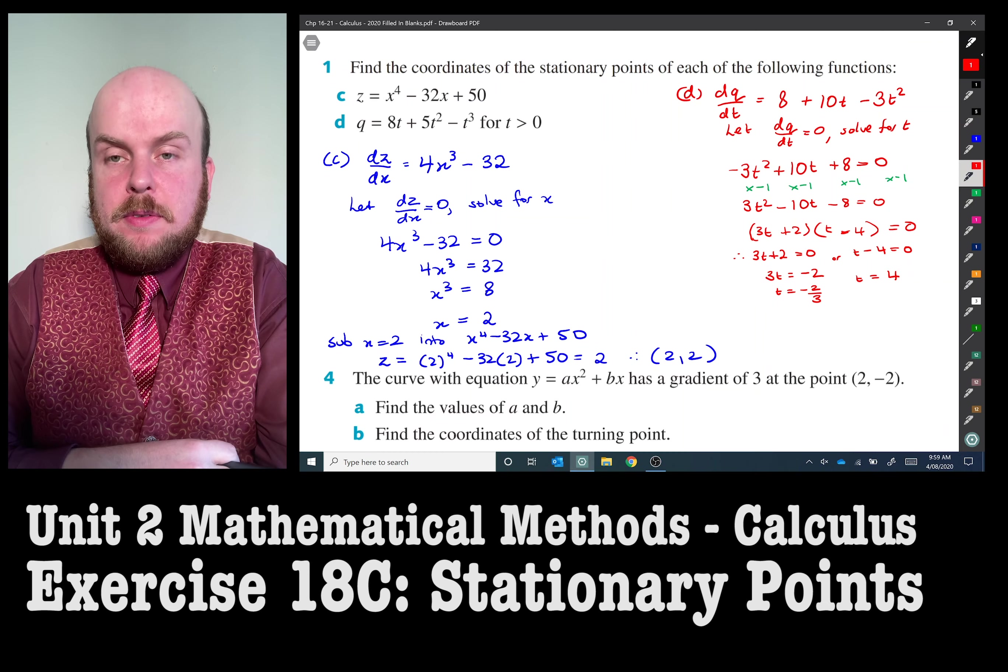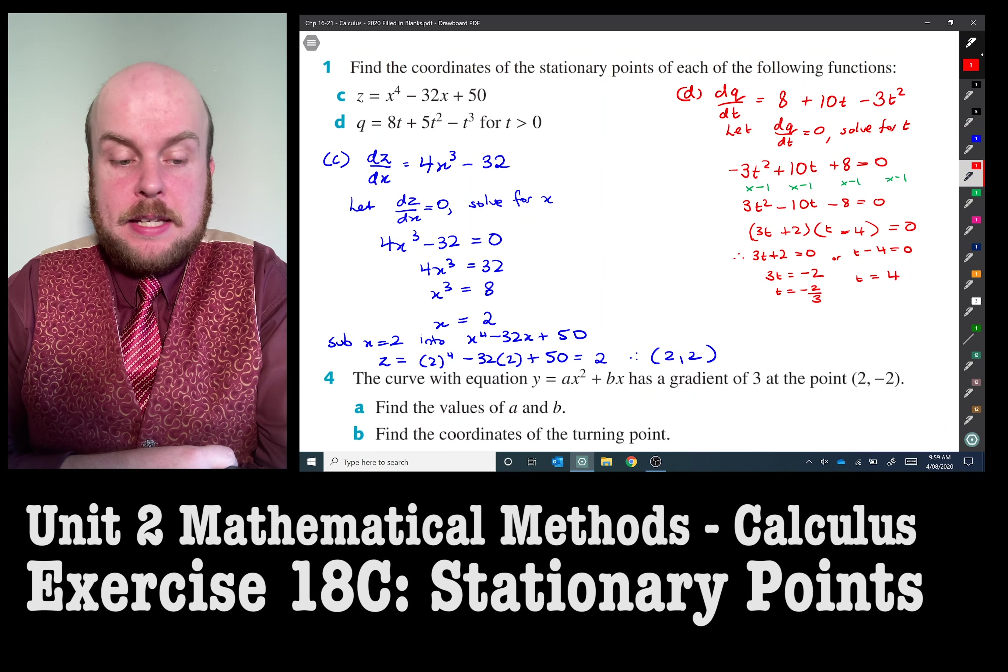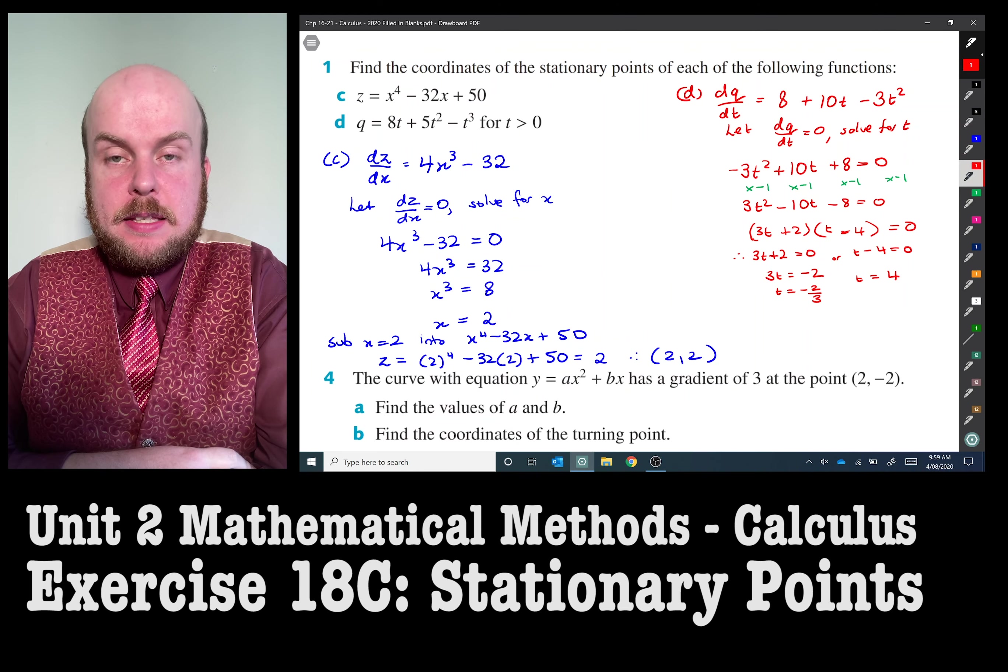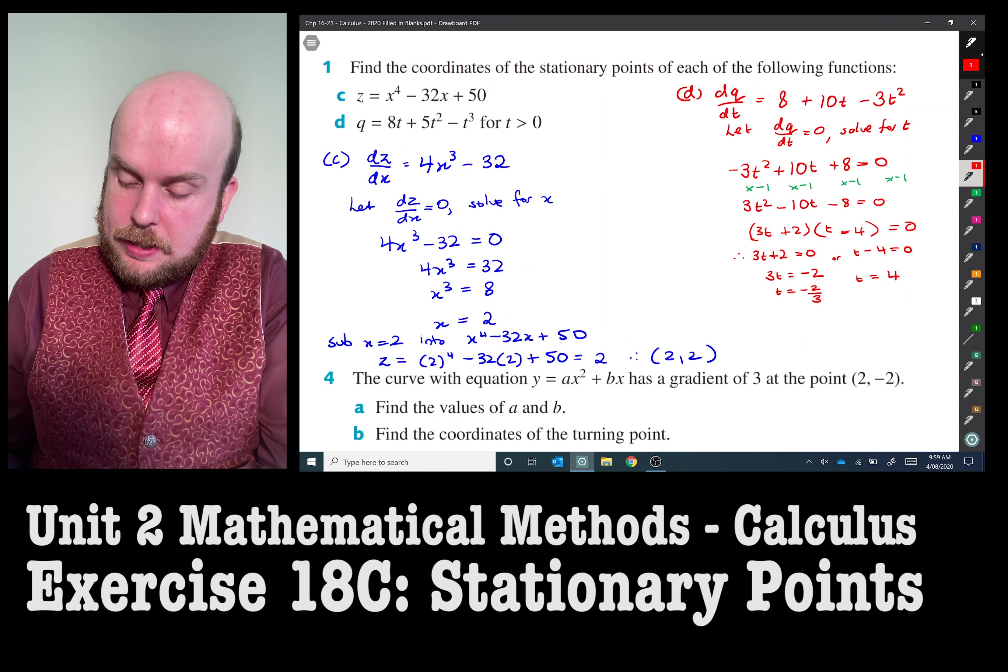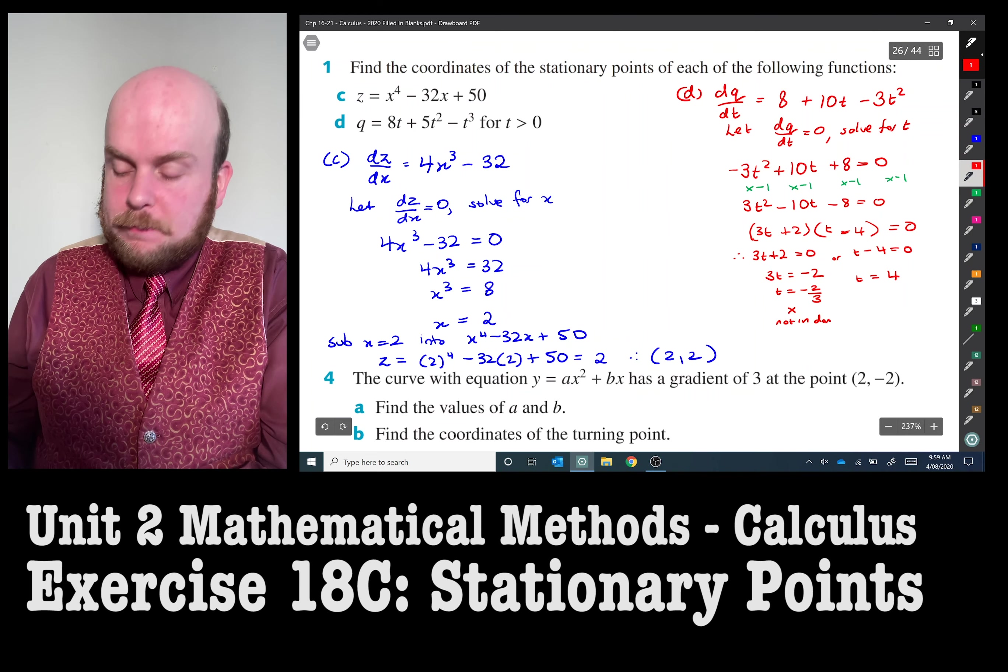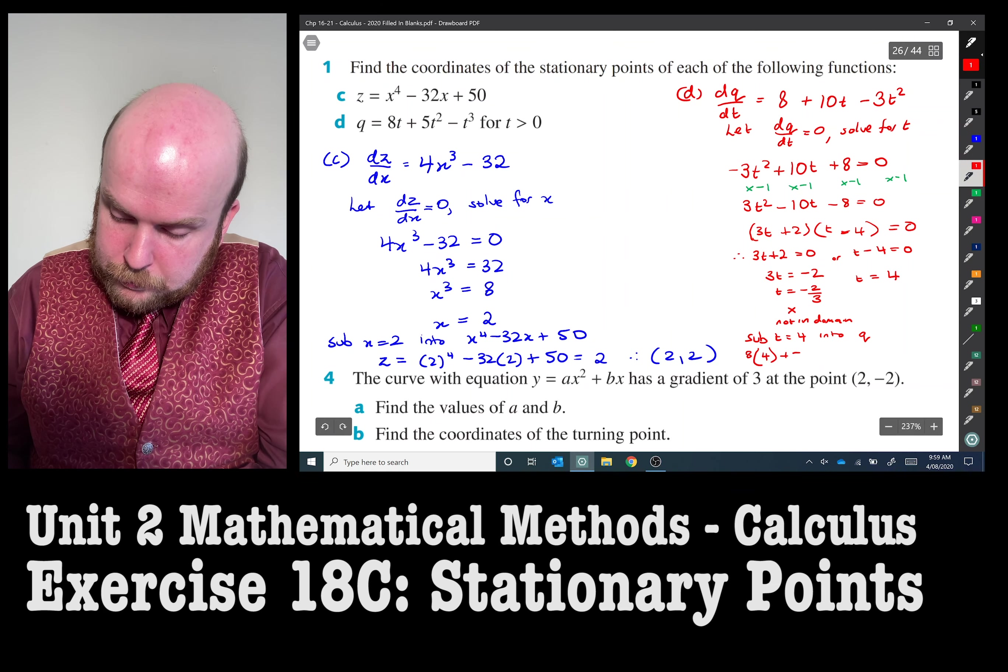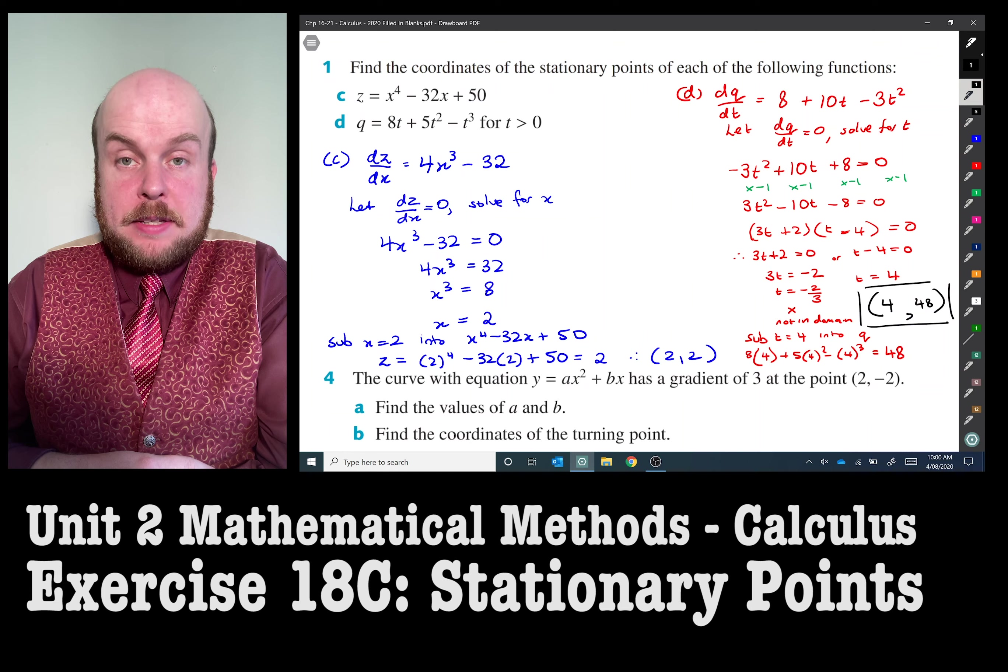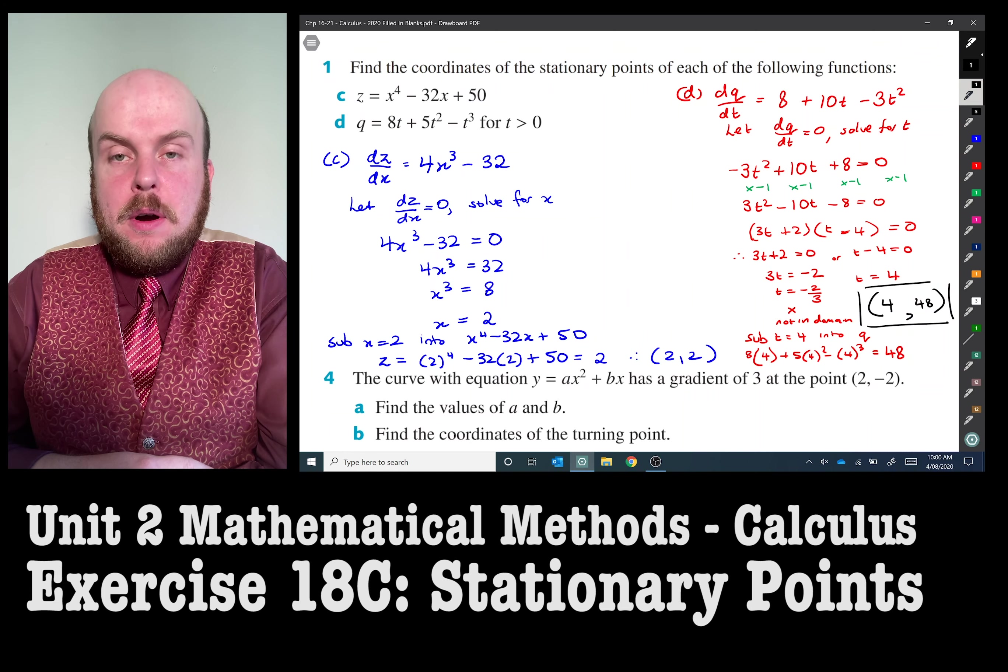So we factorized and we've solved. Now you'll notice that one of the t's is less than zero, but it is not in the domain because we've asked for t's greater than zero. So we can discard this one and then just substitute in the other one. My stationary point here is at (4, 48).